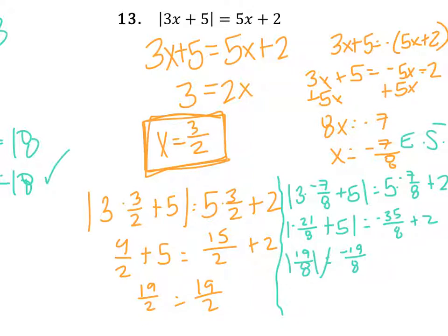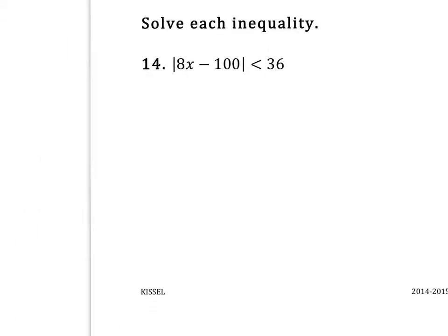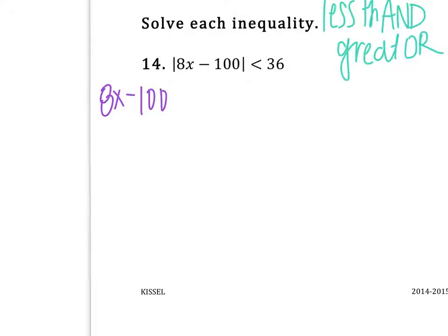Two more to go, guys. Same idea. The absolute value bars are isolated so I can split it up into two inequalities. Remember, when you're doing inequalities, absolute value, they're going to be a compound inequality. If the sign is less than, I want you to think less than, meaning it's going to be an and inequality. Shade in the middle. So if it starts off with a greater than sign, I want you to think great, or, meaning it's going to be probably shading the edges. So on this problem right here, I need to get a new color. I'm going to keep one the exact same: 8x minus 100 is less than 36. It's less than, so it's going to be and. Keep the left side the same, flip the sign, and make the right side negative. Solve.